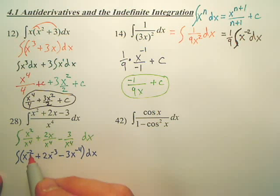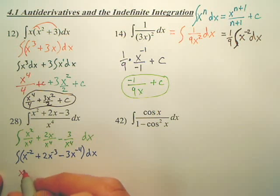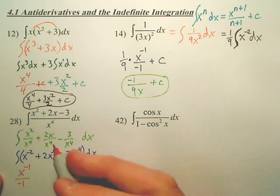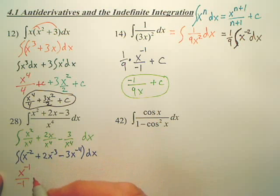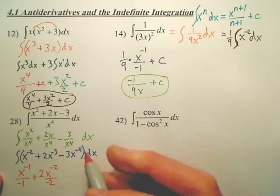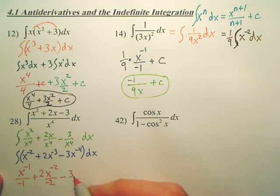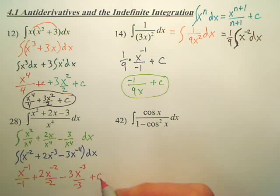Add 1 to negative 2, you get negative 1, and then you divide by negative 1. Add 1 to negative 3, and you get negative 2. Add 1 to negative 4, you get negative 3, and divide by negative 3 plus c.